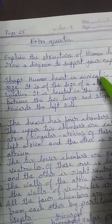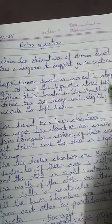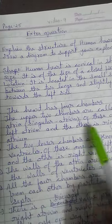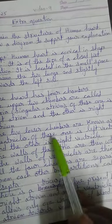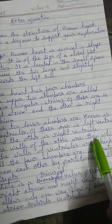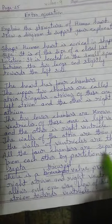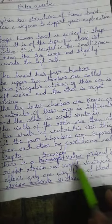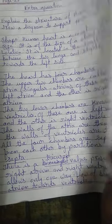When writing the answer, the heart is conical in shape, about the size of a closed fist, located between the two lungs. The heart has four chambers: the upper two are called atria — one on the left and one on the right — and the lower two are known as ventricles. Walls of the atria are thin and walls of the ventricles are thick. All four chambers are separated by partitions called septa. A tricuspid valve is present between the right atrium and right ventricle, and a bicuspid valve between the left atrium and left ventricle.